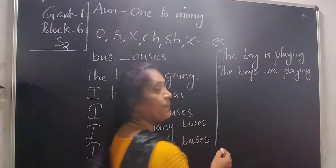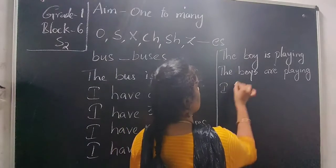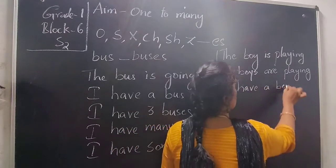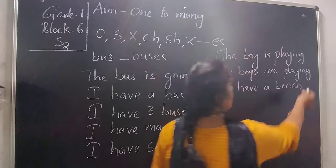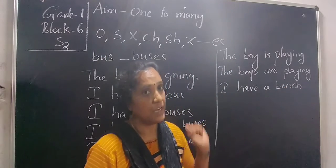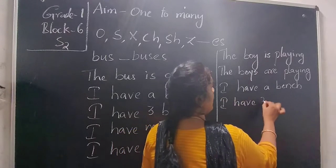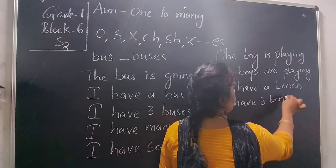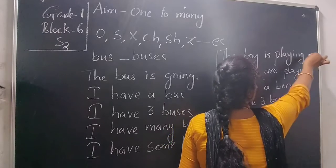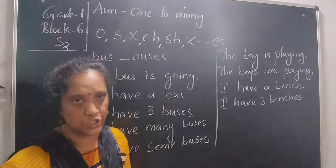The boys are playing. Now about things — I have a bench. Because when the word ends with CH, we want to use ES. So we write 'I have three benches' — bench, adding ES. And don't forget that you want to use a capital letter and end the sentence with a full stop.